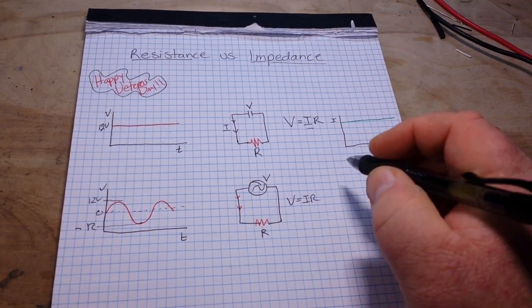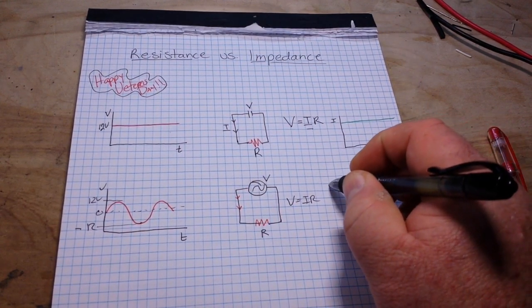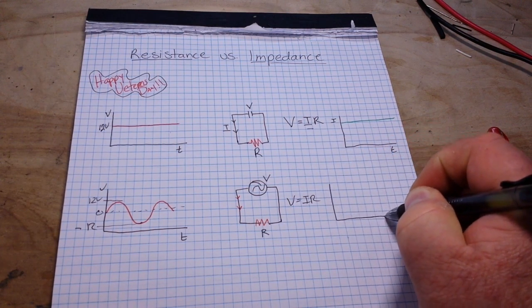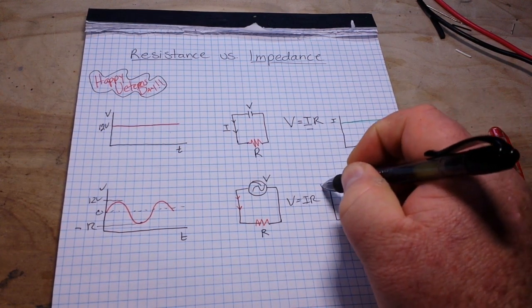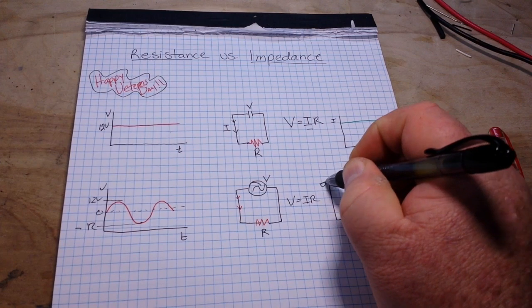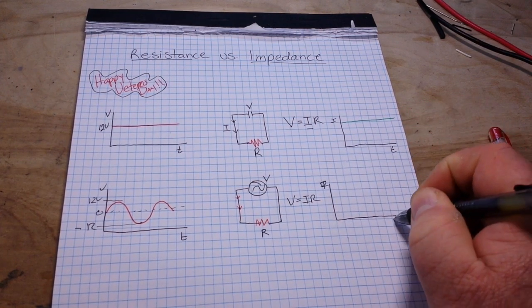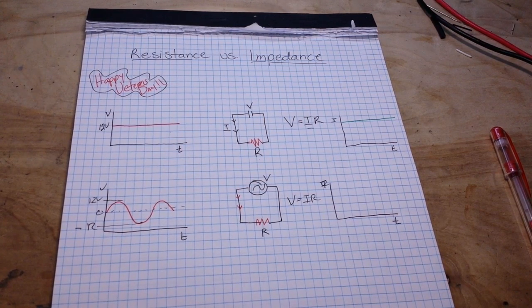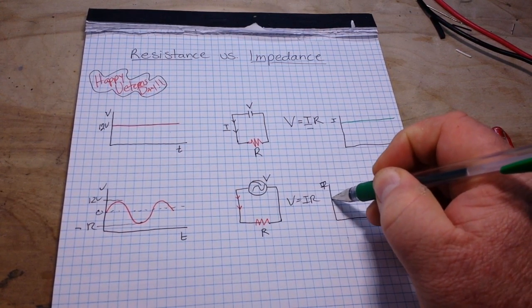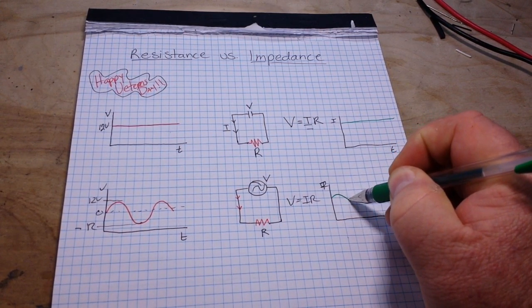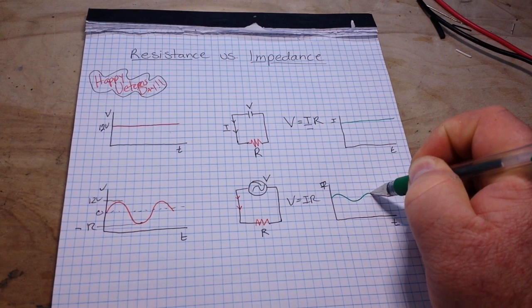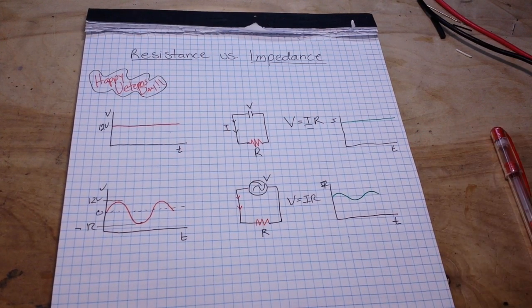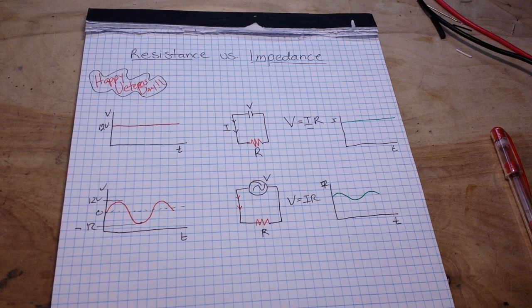So what's going to happen here when we look at our graph current over time, our current is also going to be a sine wave too.